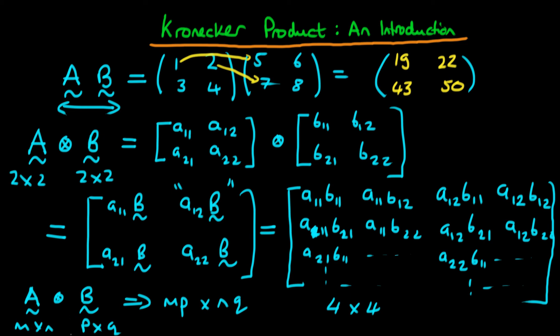The reason I've introduced this particular type of matrix multiplication, the Kronecker product, is that it's going to be useful in describing SUR estimators and also in describing panel estimators, random and fixed effects estimators respectively.